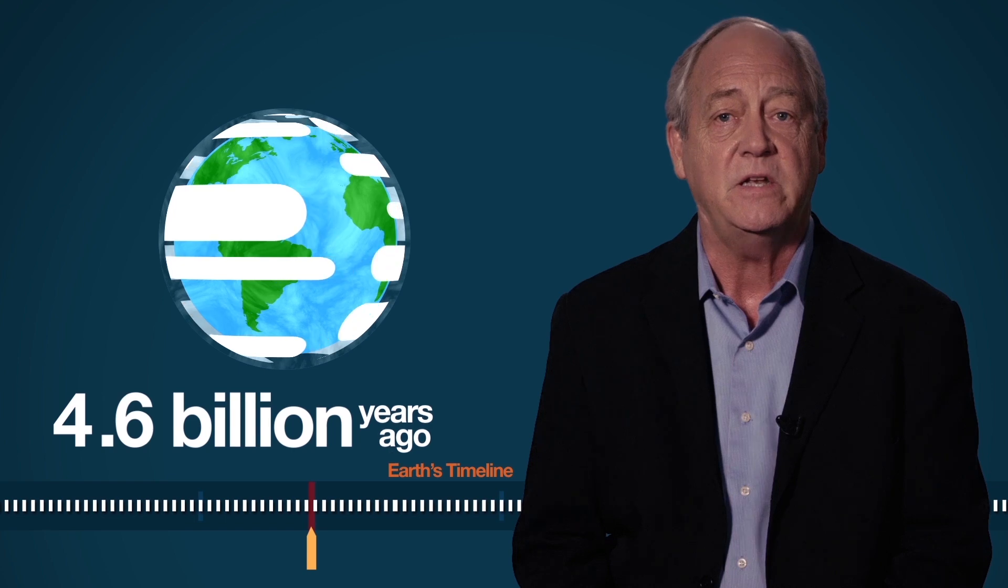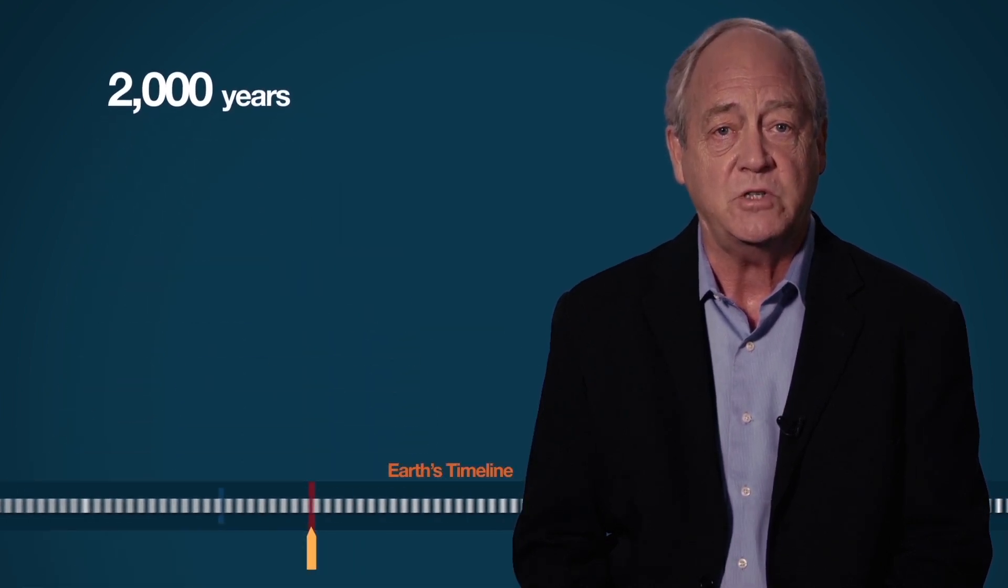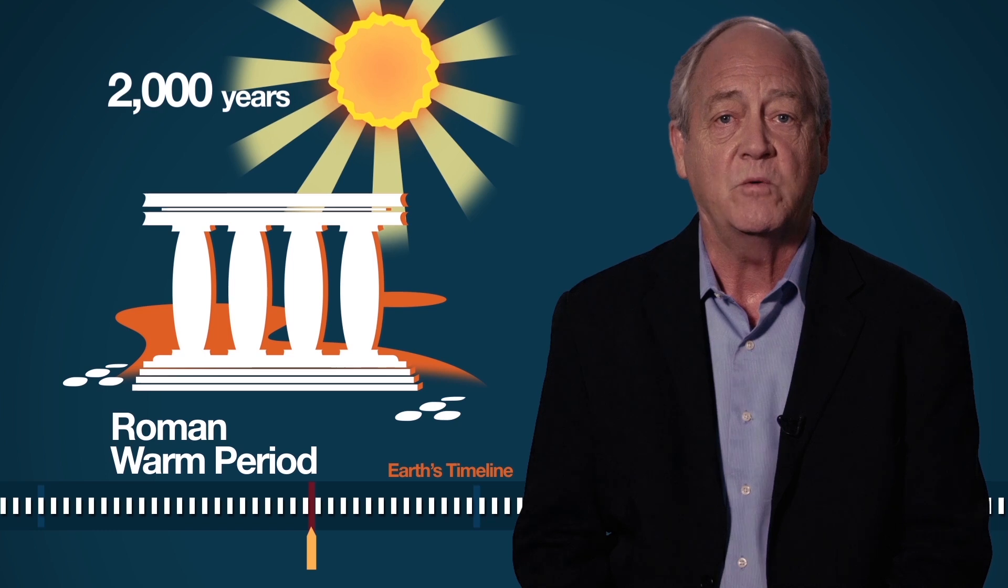The climate has been constantly changing since the Earth was formed 4.6 billion years ago. For example, in just the past 2,000 years, we have seen the Roman Warm Period, when it was warmer than today.